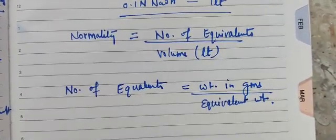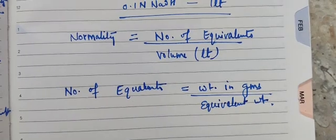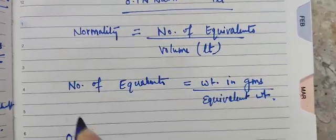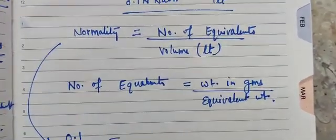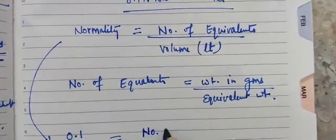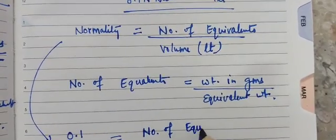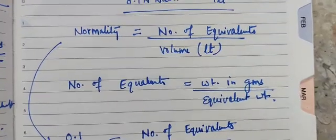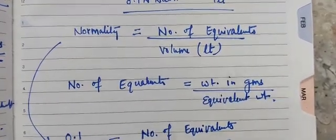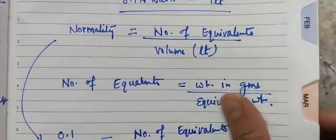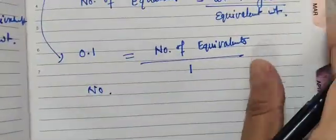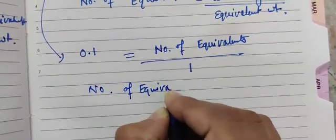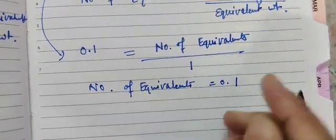Okay. So what we have, we have been given normality that is 0.1, number of equivalent we have to find out. And volume in liter is 1. So from here, what we get, we get number of equivalents. That is 0.1.